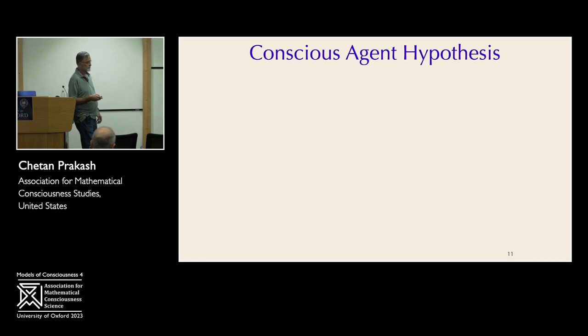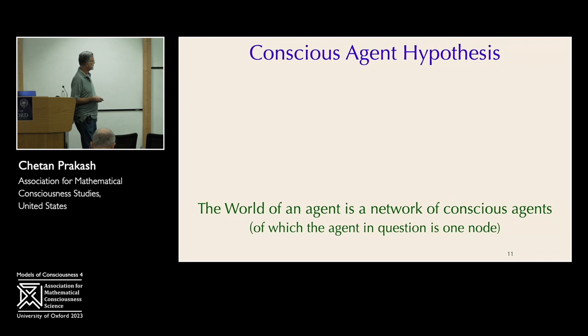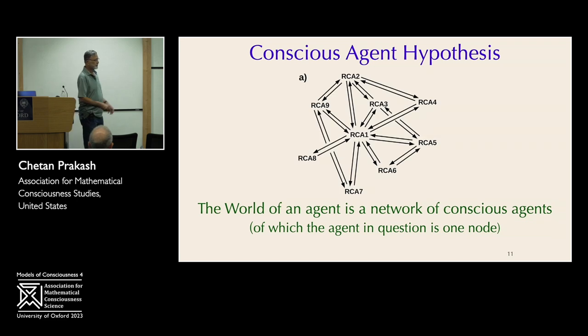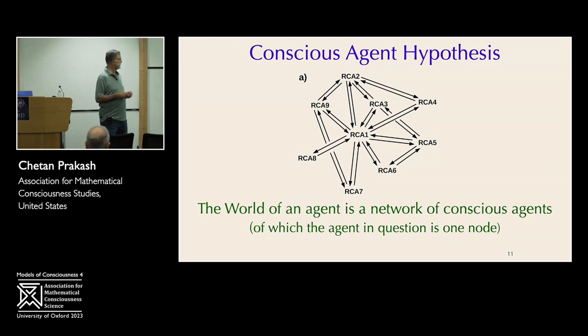And then the next hypothesis I want to make is the conscious agent hypothesis, which is that the world of an agent is a network of conscious agents, of which the agent itself is one node. But in general, there could be many, many conscious agents interacting with each other in a network. And the point is that it's consciousness all the way down. Consciousness interacting with itself in some sense. So that's the basic building block and the basic assumption of this theory.